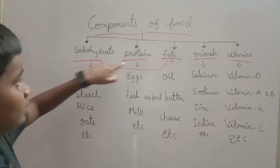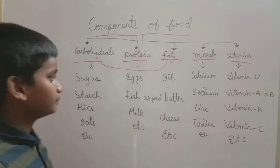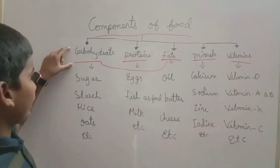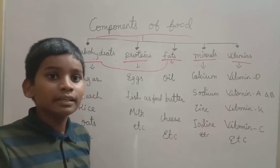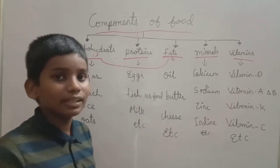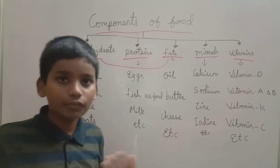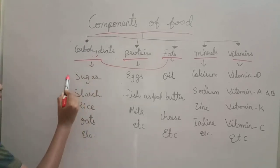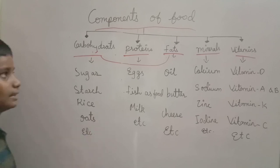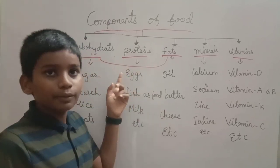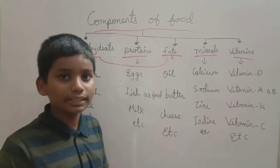The five major nutrients are carbohydrates, proteins, fats, minerals, and vitamins. Now, carbohydrates — the importance of carbohydrates is that they are energy-giving food. If you want energy, you should maintain carbohydrates in your diet. Sources of carbohydrates are sugar, starch, rice, oats, etc.